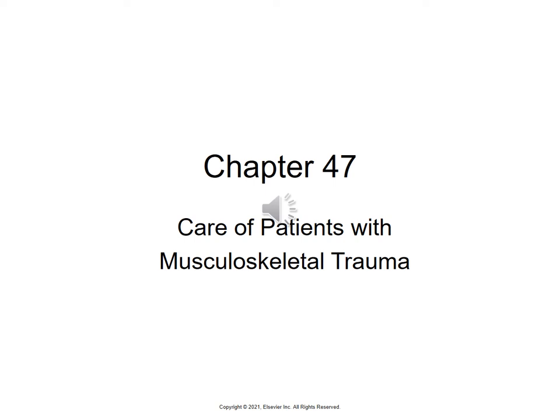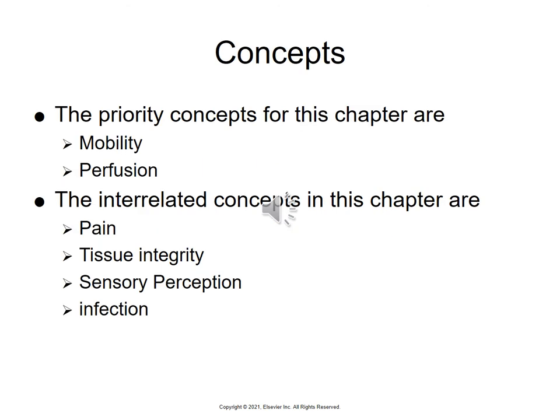Chapter 7: Care of patients with musculoskeletal trauma begins on page 1028. Our concepts are mobility and perfusion. Interrelated concepts are pain, tissue integrity, sensory perception, and infection.